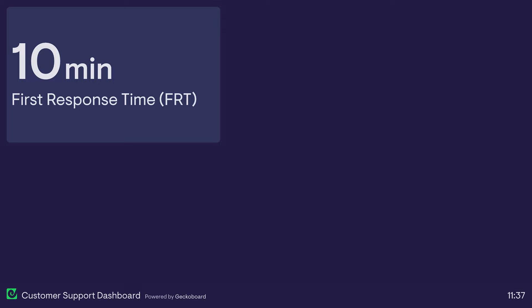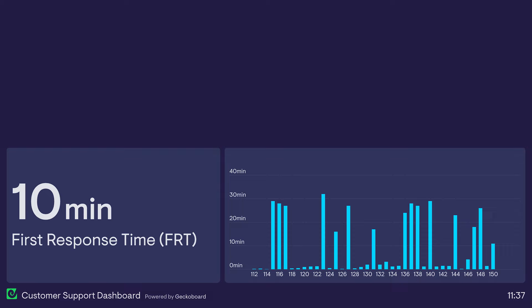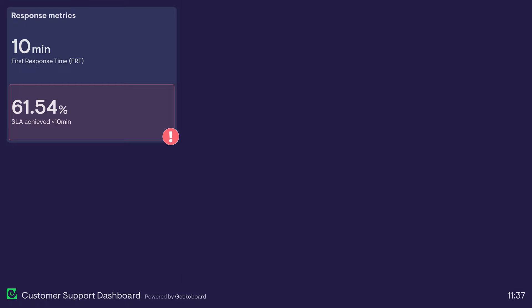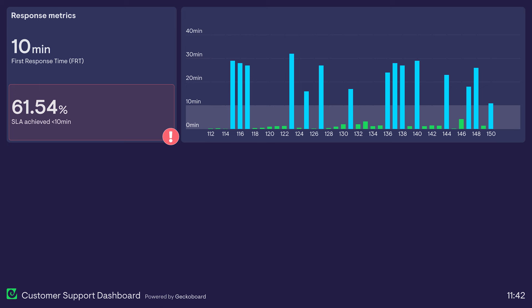Let's take a look at another example, this time from a customer support team. The team is tracking first response time because the longer your customer is waiting to be connected to an agent, the worse their experience is going to be. But the problem with FRT is that it's an average. An FRT of 10 minutes could mean that every call is being answered in 10 minutes exactly, or it could mean that some customers are receiving responses in seconds and some are waiting a very long time indeed. One way to spot if this is happening is by tracking service level agreements, or SLAs — visualising the number of customers receiving a response within the acceptable level. However, even this doesn't tell the full story. The best way to see what's going on with your FRT is to graph your data and break it down.